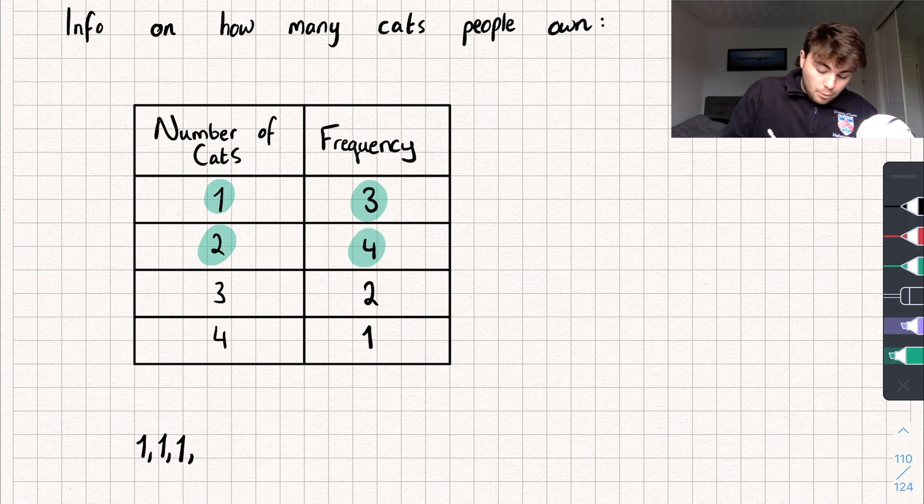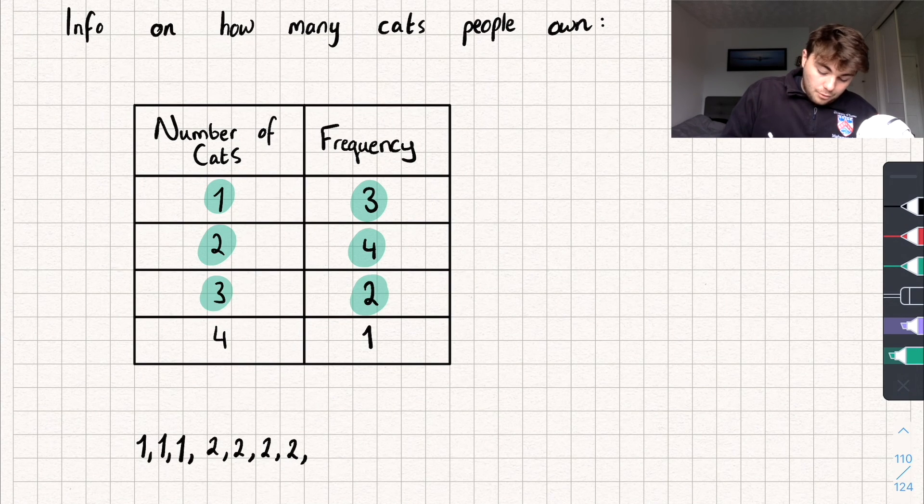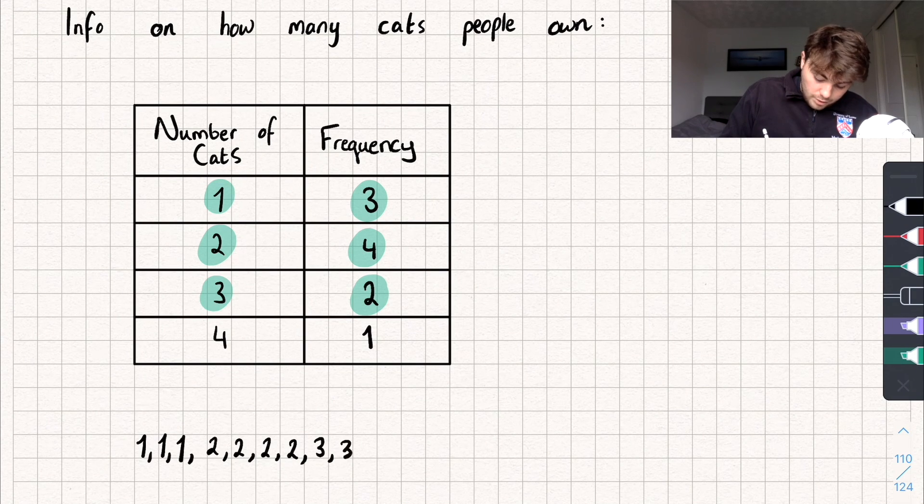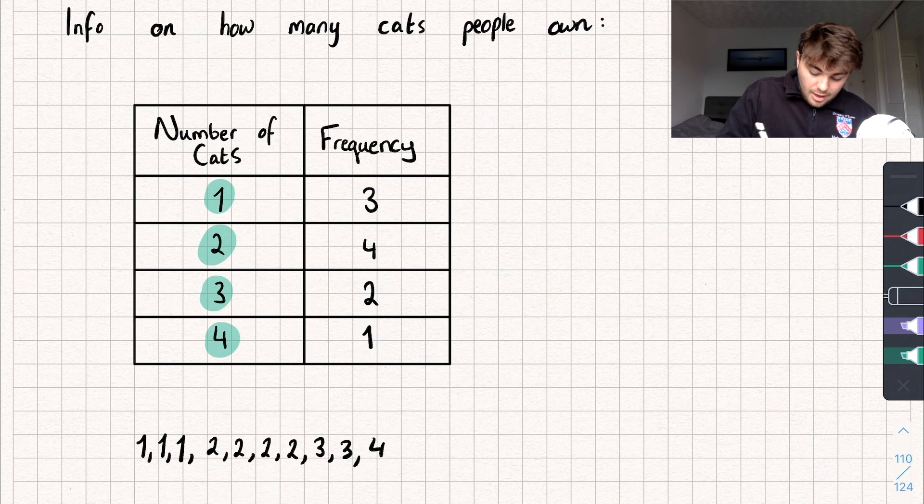We've got four people that have two cats, so I would have four twos like this. And we would have two people that have three cats, so two threes. And finally we would have one person that has four cats. So that frequency table written as a list of data would look something like that.